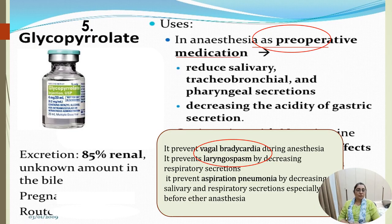Glycopyrrolate is used as a pre-anesthetic medication to reduce salivary, tracheobronchial, and pharyngeal secretions; it also reduces the acidity of gastric secretion. It prevents vagal bradycardia during anesthesia, and can prevent laryngospasm and aspiration pneumonitis.